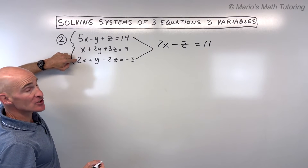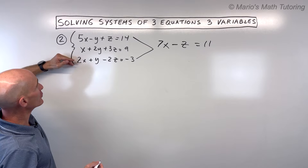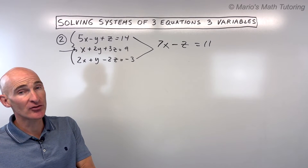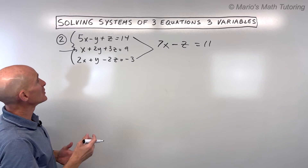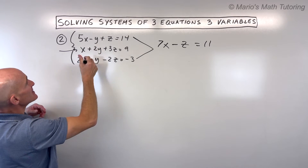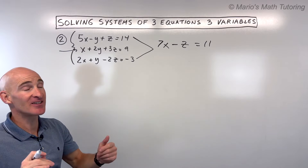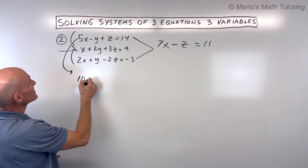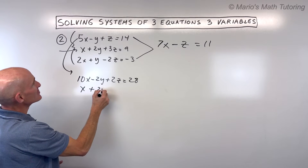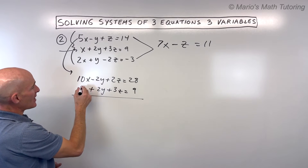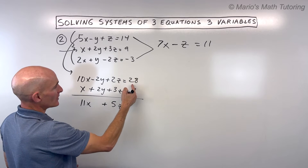Now we used the first and third equations, so we have to use the second equation — that's very important. We can combine the second with the first or the second with the third, but we must use the second equation. We decided to eliminate the y's, so we need to eliminate the y's again. I'll combine the second equation with the first: multiplying the first equation by 2 gives 10x minus 2y plus 2z equals 28. The second equation stays the same: x plus 2y plus 3z equals 9. Adding straight down: 11x, y's cancel, 5z equals 37.